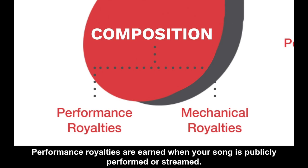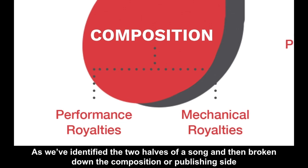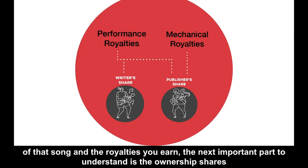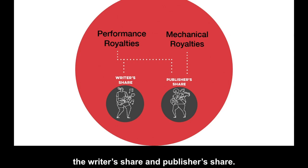Performance royalties are earned when your song is publicly performed or streamed. Mechanical royalties are earned when your song is physically or digitally reproduced or streamed. Having identified the two halves of a song and broken down the composition or publishing side and the royalties you earn, the next important part to understand is the ownership shares associated with those royalties — broken down into the writer's share and the publisher's share.